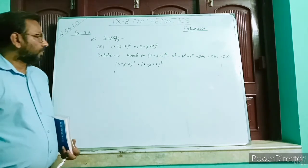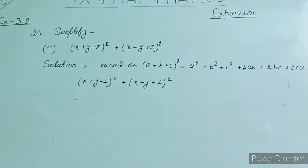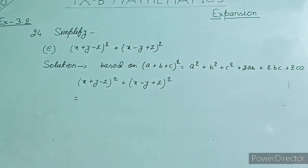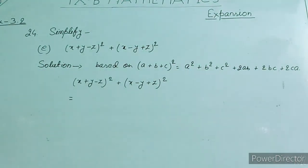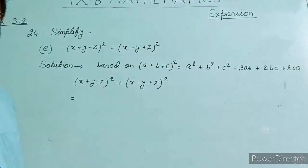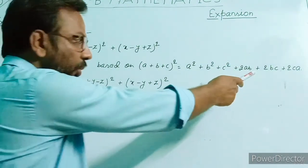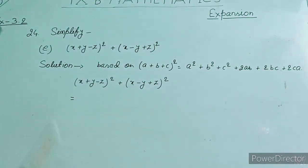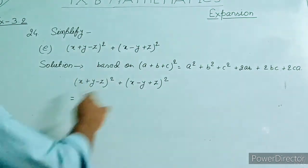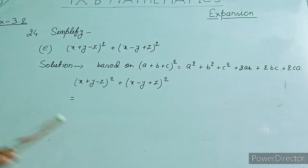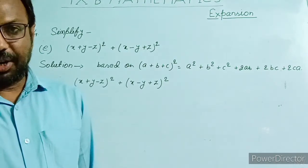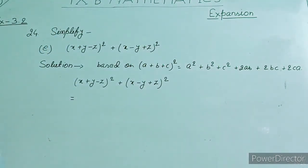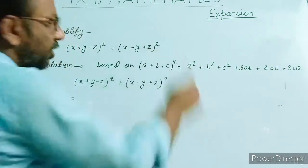Question number 24e: simplify (x + y - z)² + (x - y + z)². This question is based on (a + b + c)² = a² + b² + c² + 2ab + 2bc + 2ca. You have different formulae also — you can use (a + b - c) and (a - b + c) separately, but the number of formulae will increase and that will be extra work. So we can use only this one formula to solve this type of question.